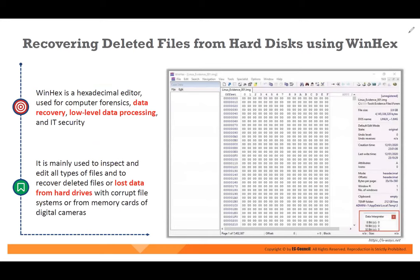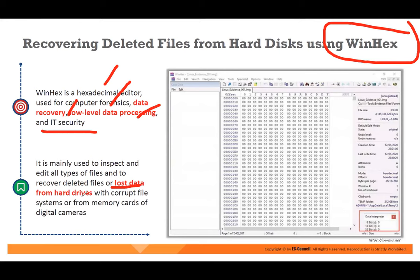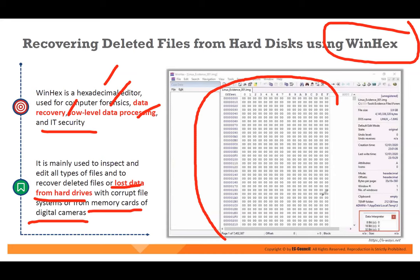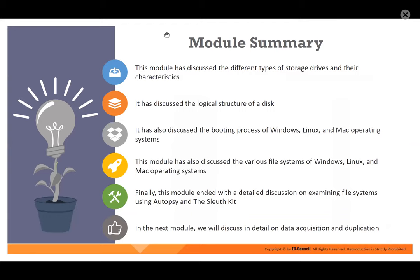We use a tool called Binx — a hexadecimal editor used for computer forensics, data recovery, and low-level data processing and IT security. It is mainly used to inspect and edit all types of files and to recover deleted files or lost data from hardware with a corrupt file system or from memory cards of digital cameras. So if you have the Binx tool, it can recover deleted files. Before we get into the lab, let me summarize: we talked about different types of storage drives, the logical structure of the disk, how the system boots in Windows, Linux, and Mac, and different file systems. We also talked about how to examine the file system using Autopsy and TSK.